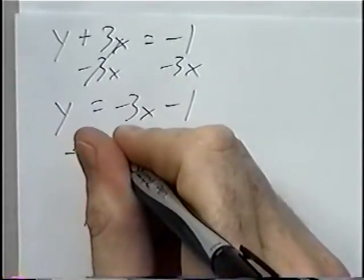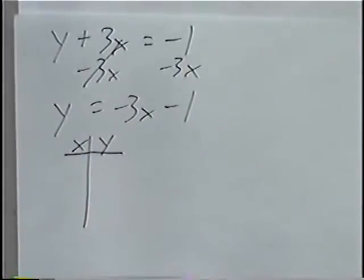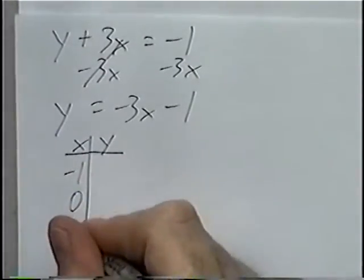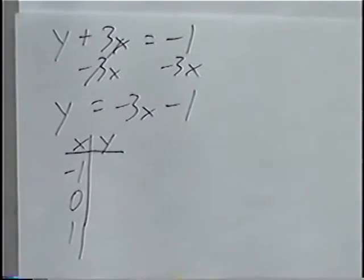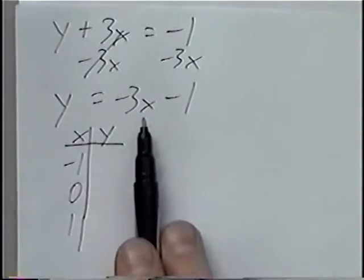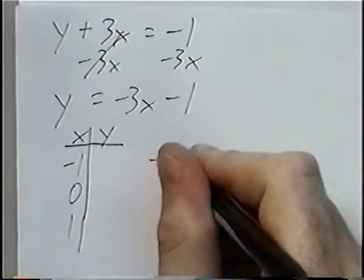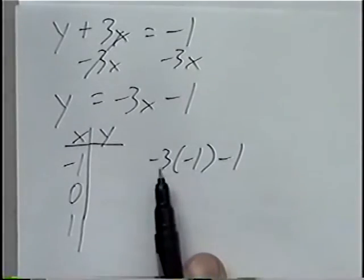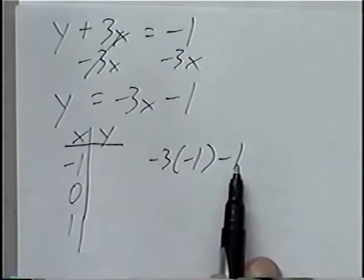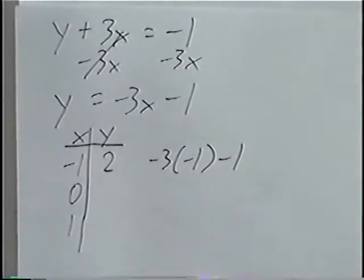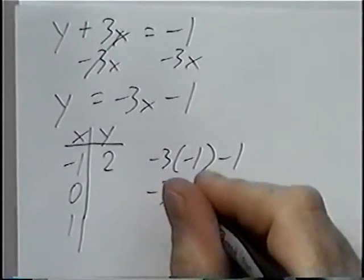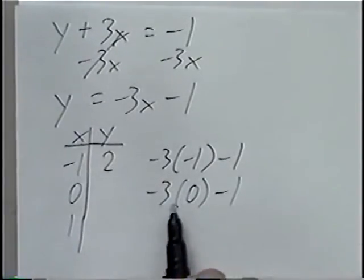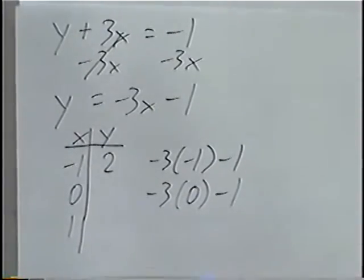From here we draw the t-table. You can use any numbers for x, but the three best are negative one, zero, and positive one. Plugging in negative one: negative 3 times negative one minus one — negative three times negative one is positive three, and three minus one equals two. Plugging in zero: negative 3 times zero minus one — that's zero minus one, which equals negative one.